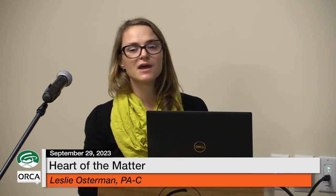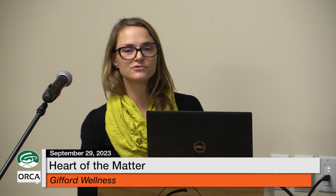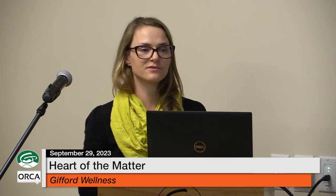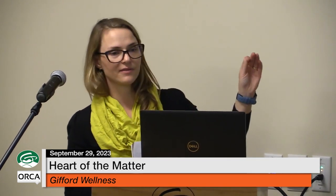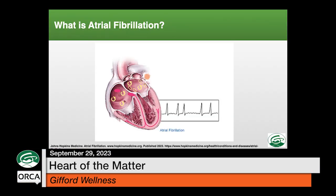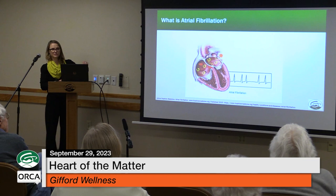Atrial fibrillation is when the electricity is not moving through that nice organized pattern — it's moving in those top chambers of the heart in a very chaotic and disorganized way. That signal is coming from somewhere other than the SA node, creating this quivering or fibrillation. On the EKG you can see the fibrillation in that baseline, and then in a very irregular pattern you can see when that electrical signal gets down to the bottom chambers.